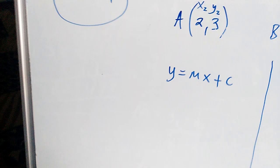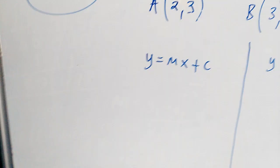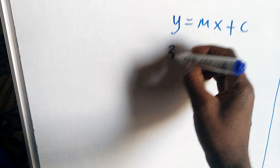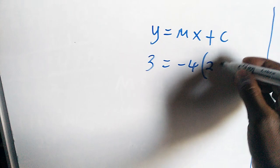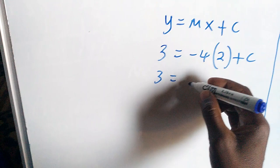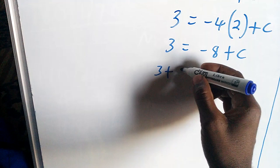Y being 3 using this coordinate, m being negative 4, x being 2. We can get our c. Therefore, we say 3 is equal to negative 8 plus c. Collection of like terms, our c will therefore equal to 11.